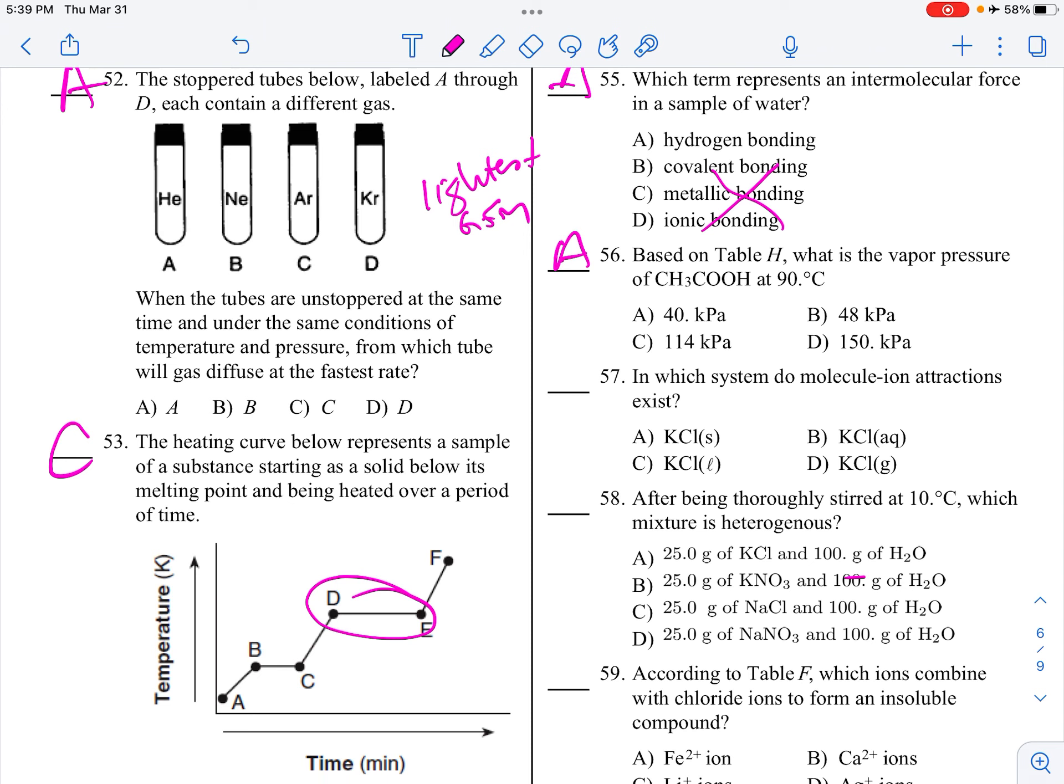In which system do molecule-ion attractions exist? You've got to have molecules, which is going to be H2O, and you've got to have ions, which these all have. They all have ions, so the only one that also includes H2O is choice B.